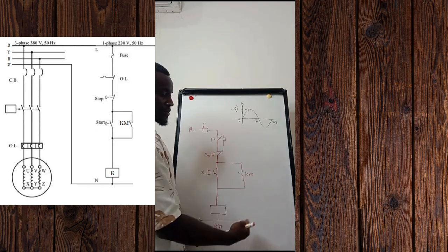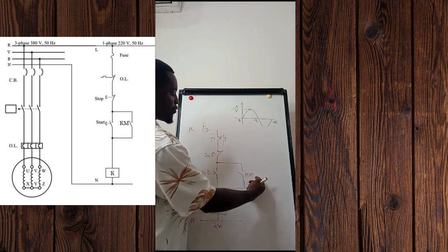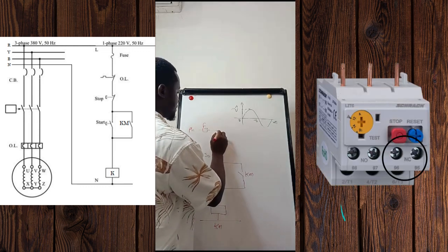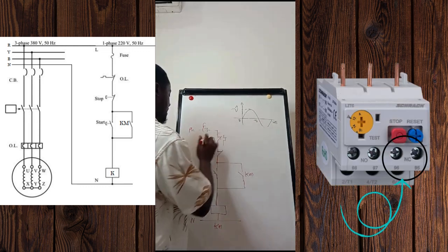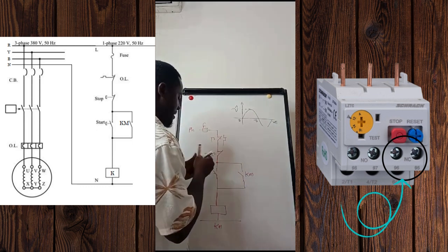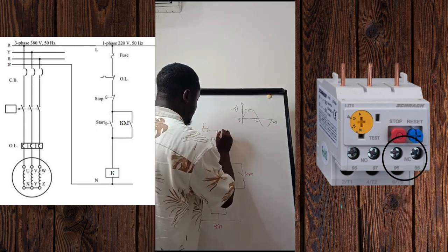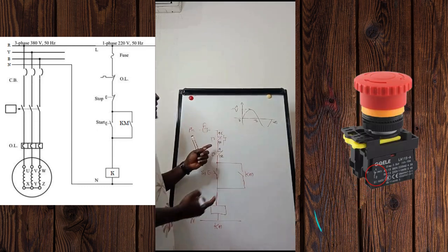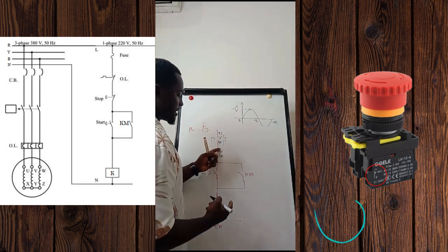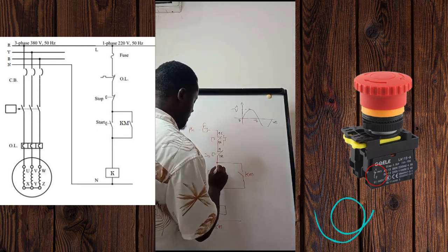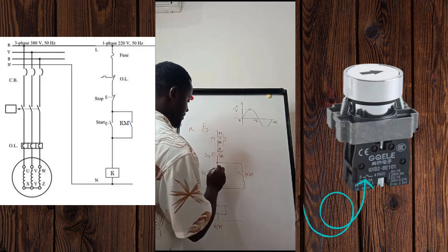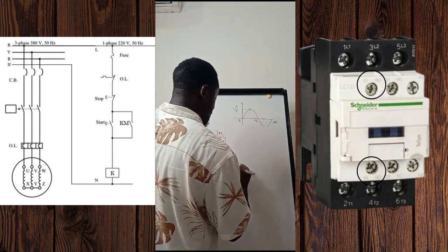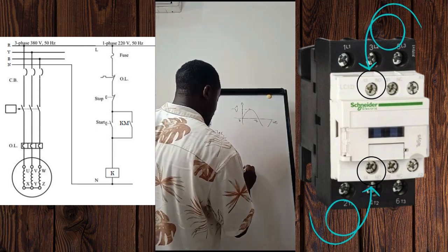If we have two contactors, we start calling them KM1, KM2, and so on. Now for the thermal relay, this is the 95-96 contact. This is the 11-12 contact. Looking at the push button contacts, you'll see 11-12 for the normally closed contact. For the normally open contact on the push button, you'll see it as 13-14. For the contactor normally open contact, you'll also see it as 13-14.